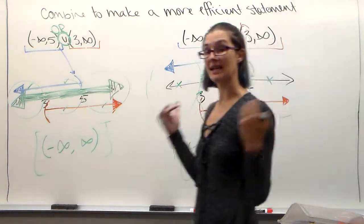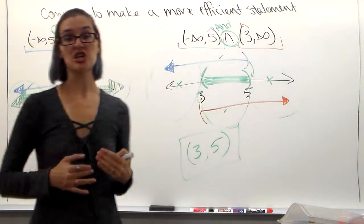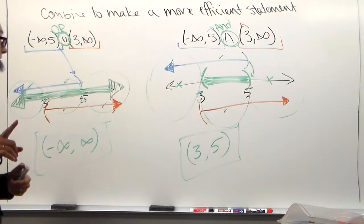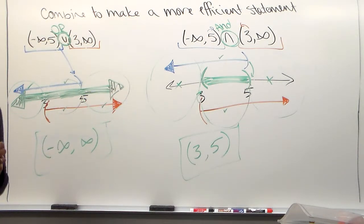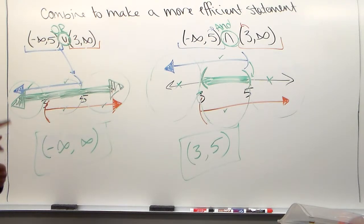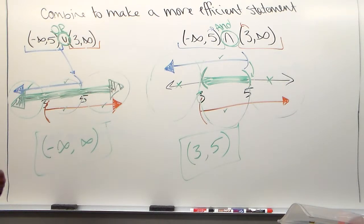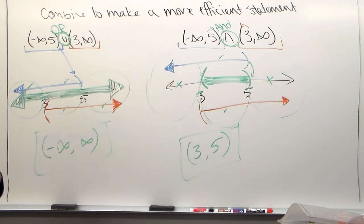Remember: OR is anything that is shaded at least once. AND is anything where they're overlapping and both are shading — it has to be both. OR could be 1 or 2, but it has to be at least something. If there's no shading, it's not going to work.